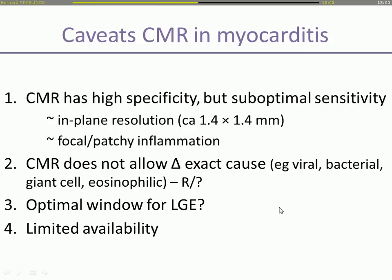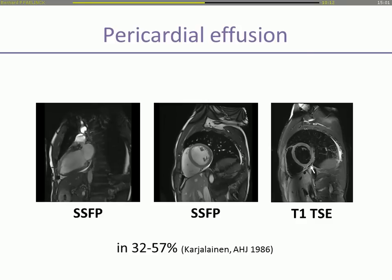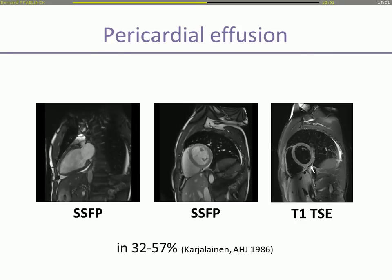Depending on the timing of CMR imaging, you could find different things. The optimal window for late gadolinium enhancement is probably after two weeks from the beginning of symptoms. CMR doesn't allow diagnosing the exact cause, which could be important especially in cases such as giant cell myocarditis. Another limitation is the availability of CMR machines. Pericardial effusion can easily be seen with CMR; it's present in about 50% of all patients with myocarditis. It is not specific for myocarditis but supports the diagnosis.